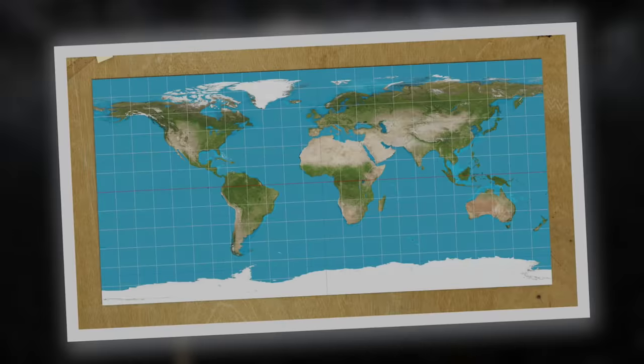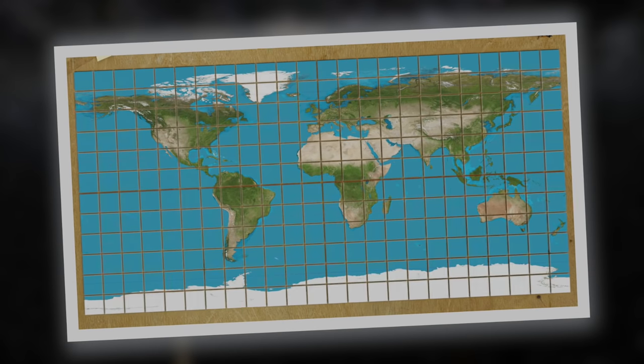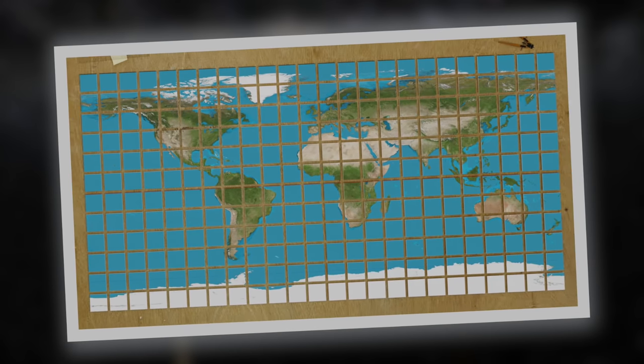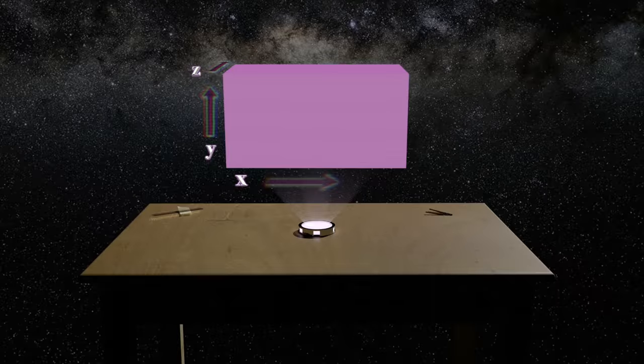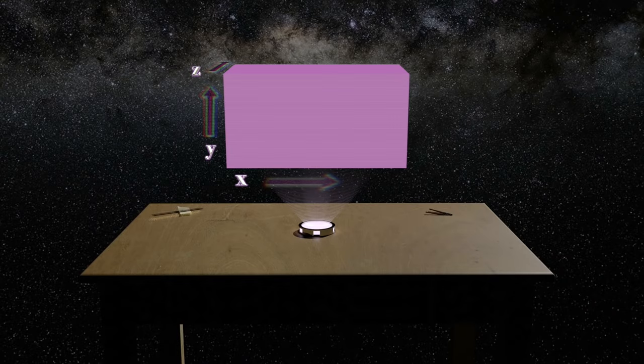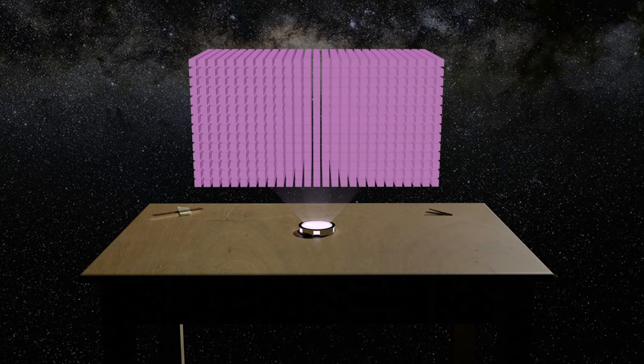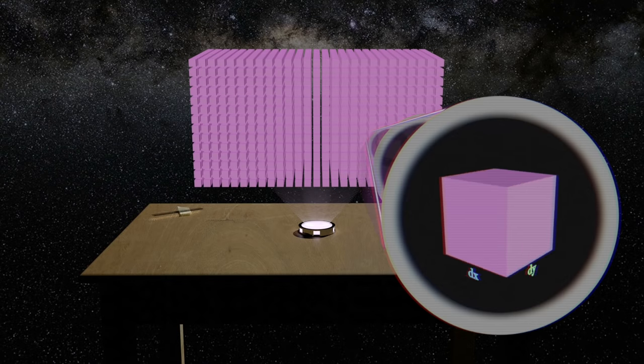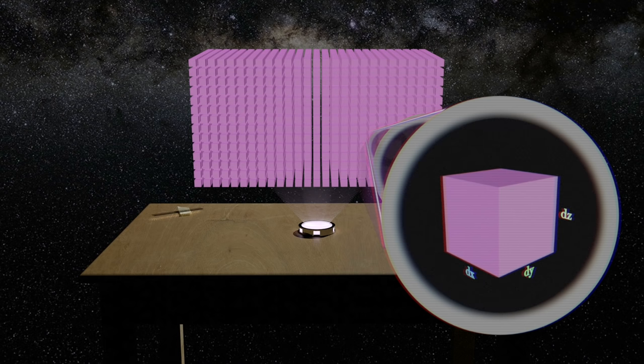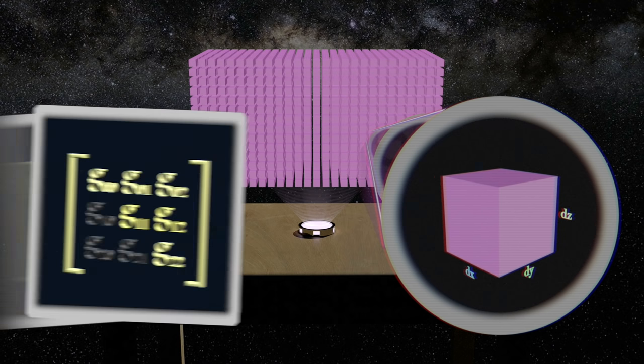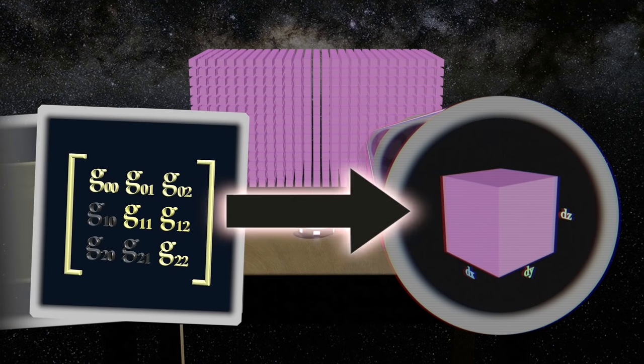Previously, we cut our map into many tiny squares. Now, we'll cut our map into many tiny, infinitesimally sized cubes, dx by dy by dz. Then we'll assign a metric tensor to each infinitesimal cube on the map.